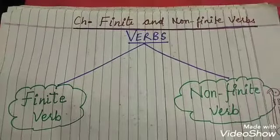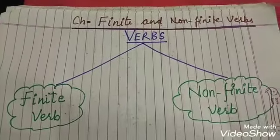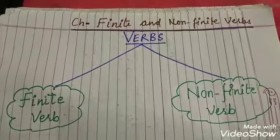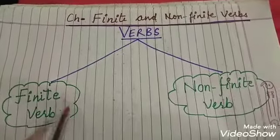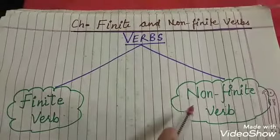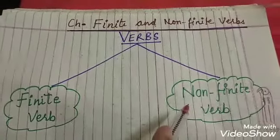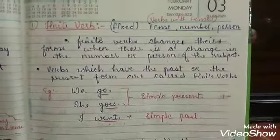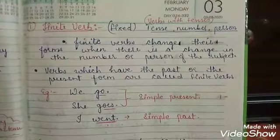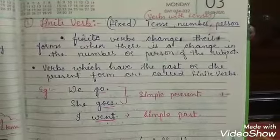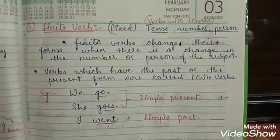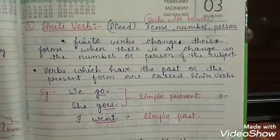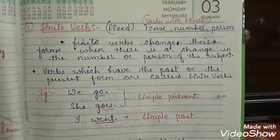Hi everyone, today we will study about the two types of verbs: finite verb and non-finite verb. Let's start with the first kind — finite verb. Finite means fixed, so finite verb means fixed verb.